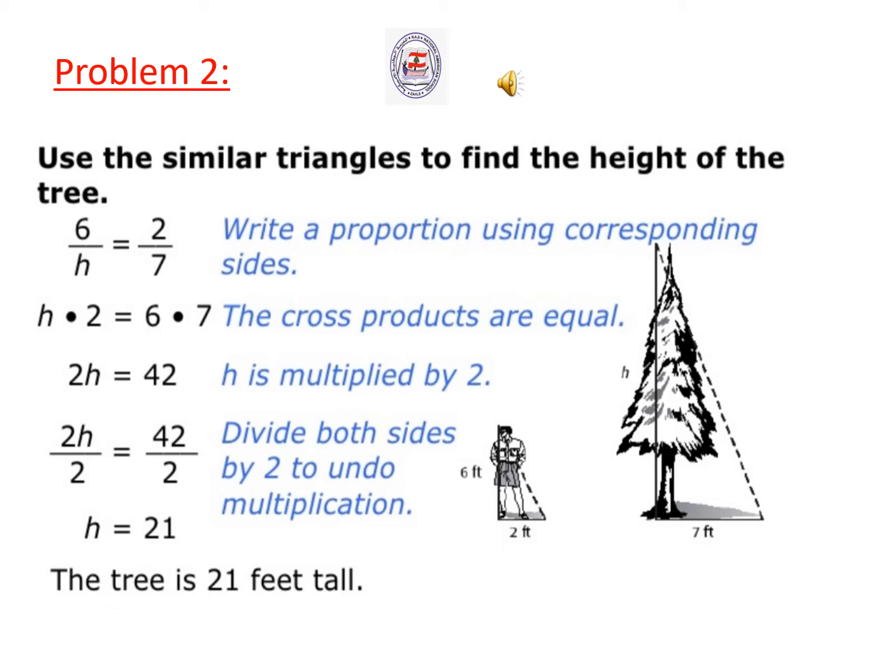2h equals 42. H is multiplied by 2. To solve for h, I'm going to divide both sides by 2 to undo multiplication. So we divide 42 by 2. H equals 21. The tree is 21 feet tall.